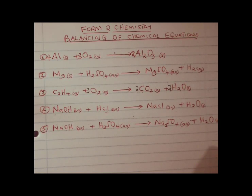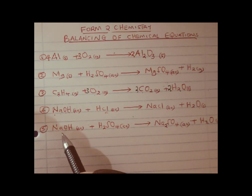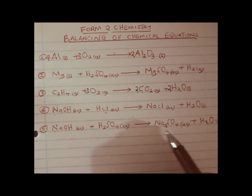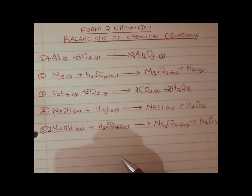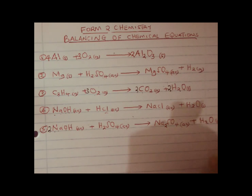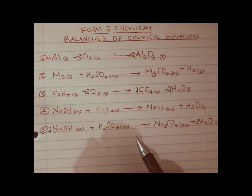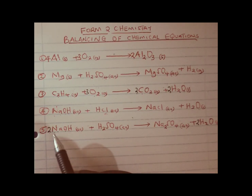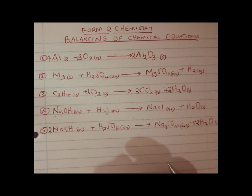We can go ahead and do the balancing, checking each element. We have 1 sodium on the reactant side and 2 on the product side, so we write 2 in front of sodium hydroxide. Then we have 1 times 2 = 2 hydrogens plus 2, giving 4. On the product side we have 2, so we write 2 in front of water to make hydrogens 4. Next, checking oxygens: we have 1 times 2 = 2 plus 4, giving 6. On the product side these are 2 plus 4, also 6. The equation is now automatically balanced.